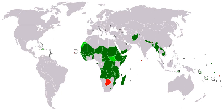Therefore, the least developed countries are the poorest of the developing countries. Developing countries tend to have some characteristics in common. For example, with regards to health risks, they commonly have low levels of access to safe drinking water, sanitation and hygiene, energy poverty, high levels of pollution, indoor air pollution, water pollution, high proportion of people with tropical and infectious diseases, and a high number of road traffic accidents. Often, there is also widespread poverty, low education levels, inadequate access to family planning services, and corruption at all government levels and a lack of so-called good governance.